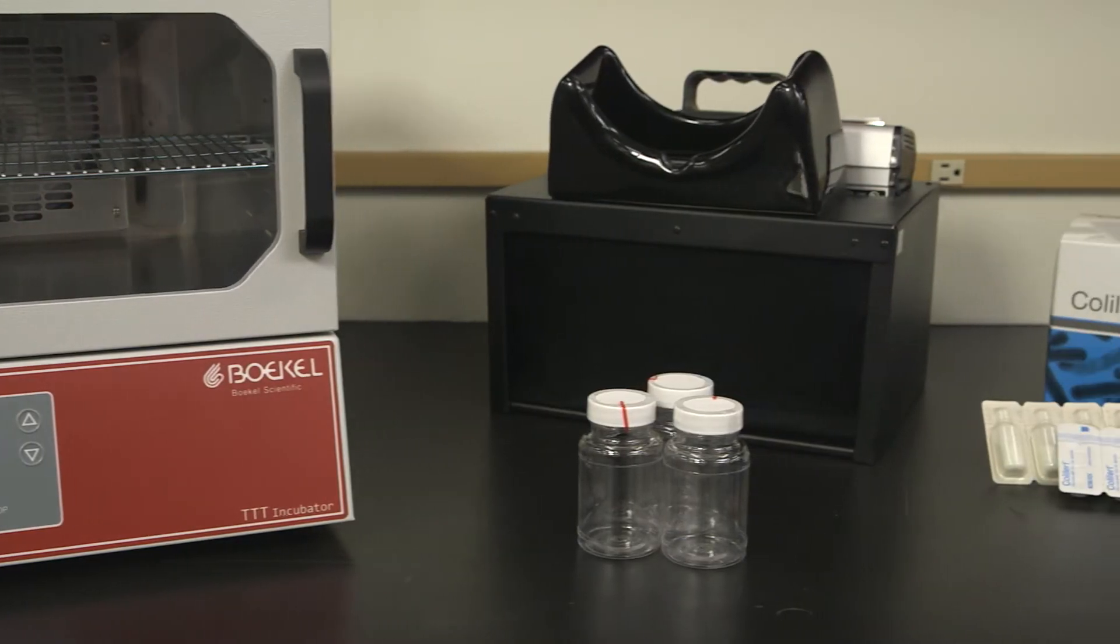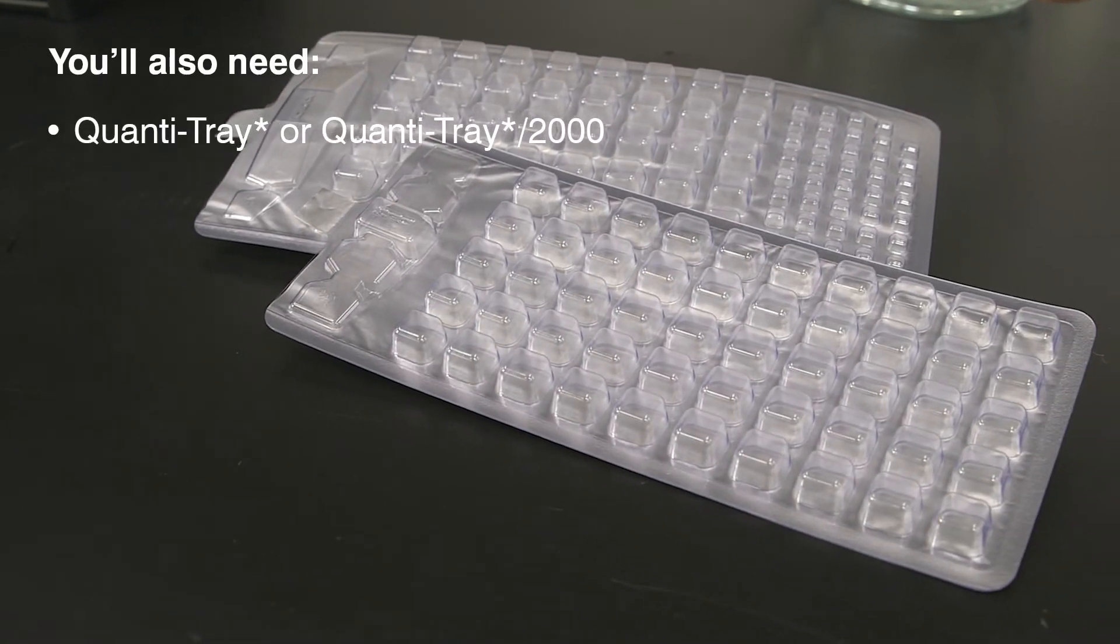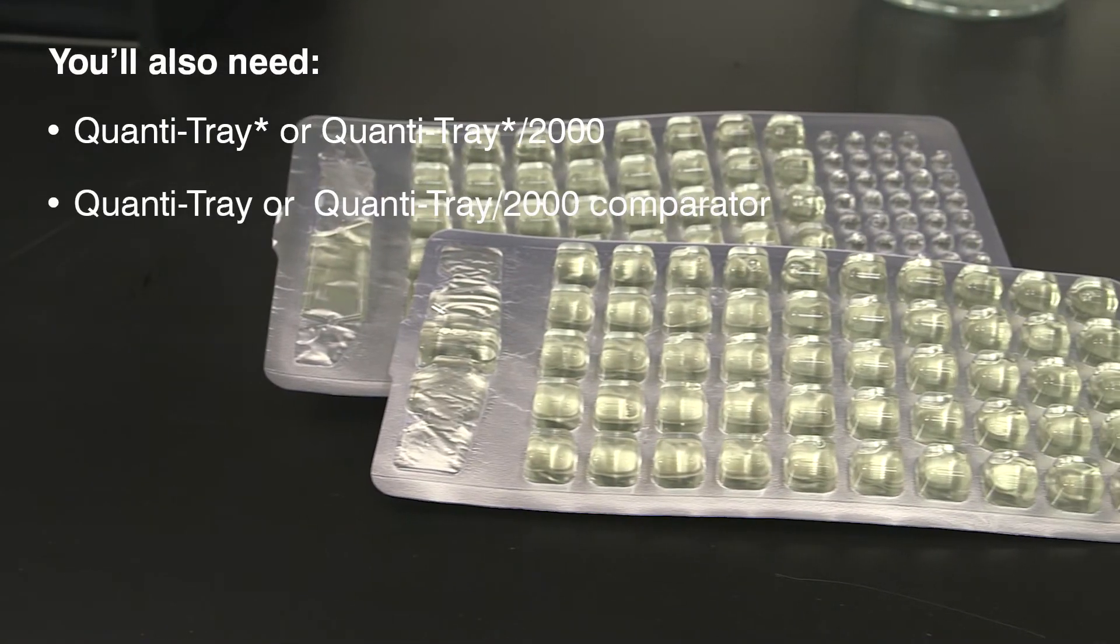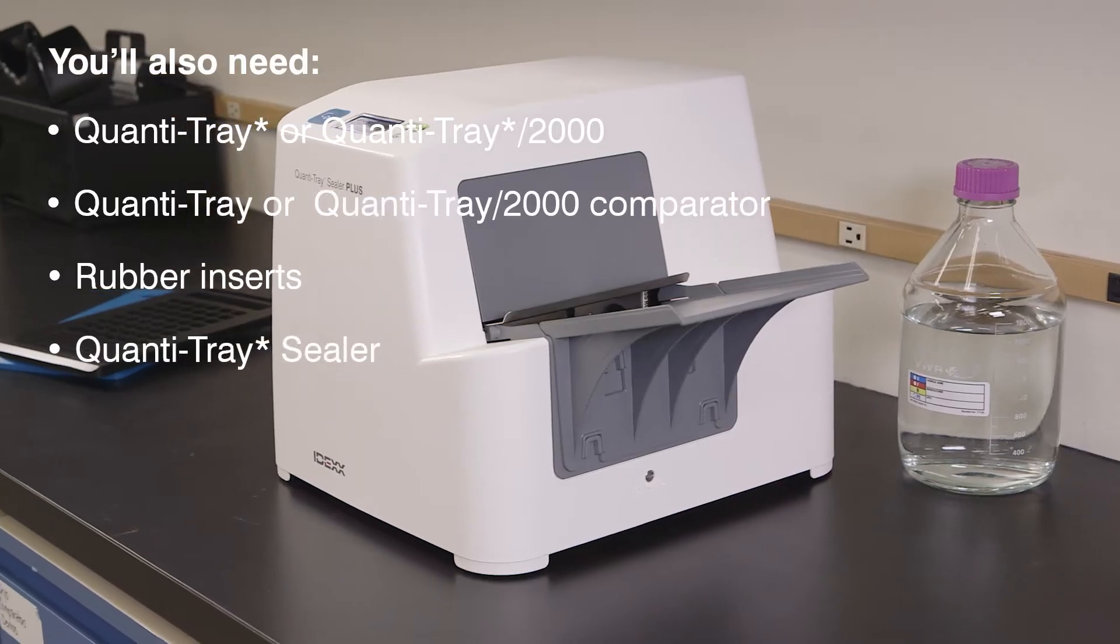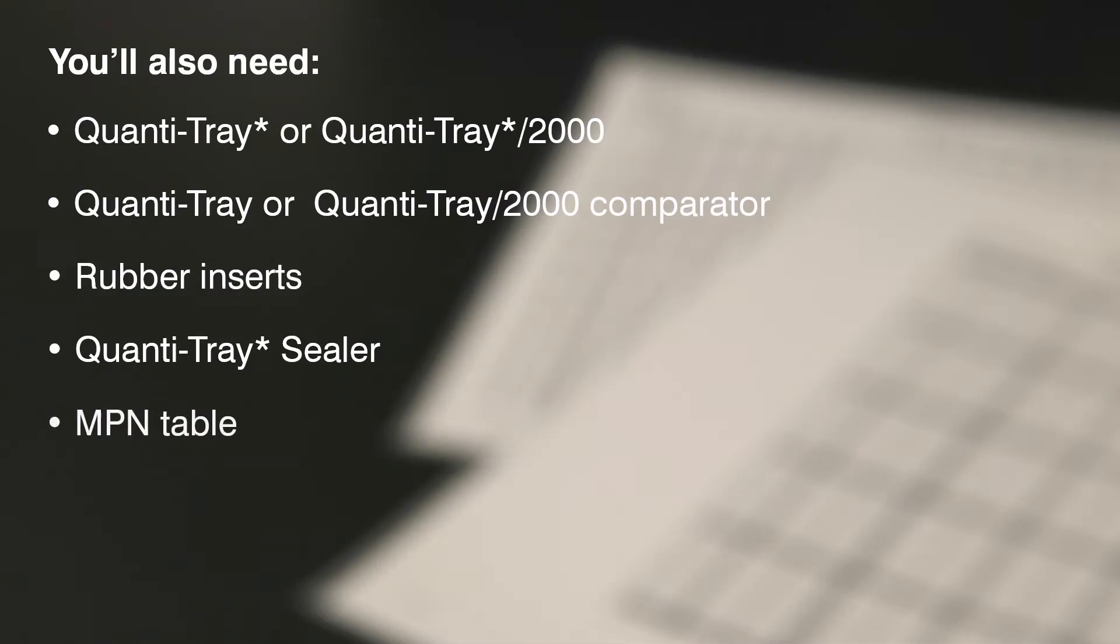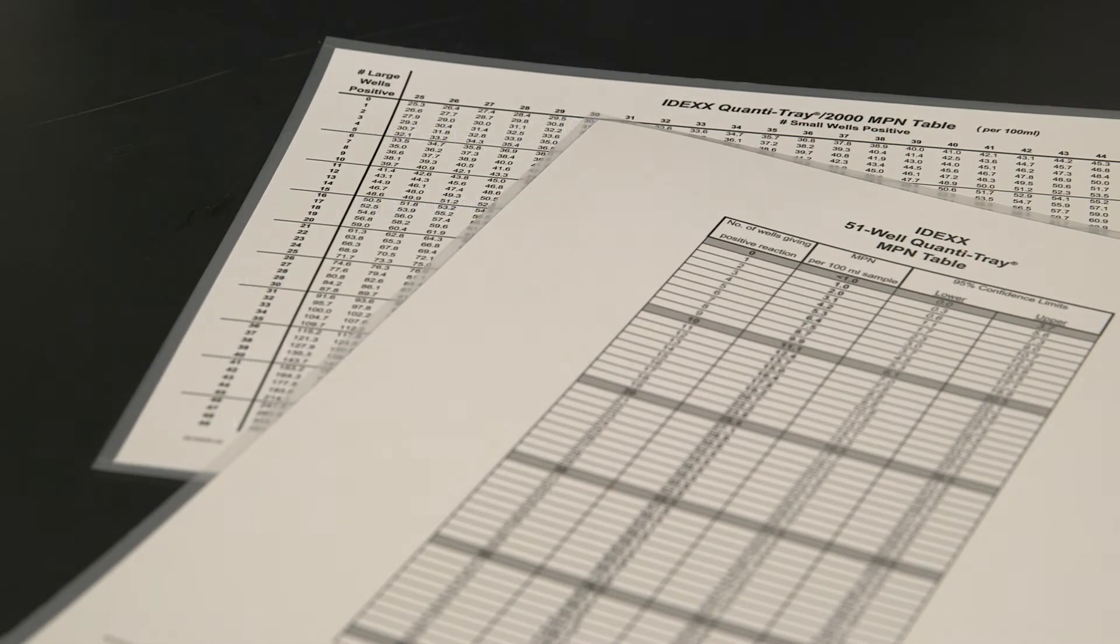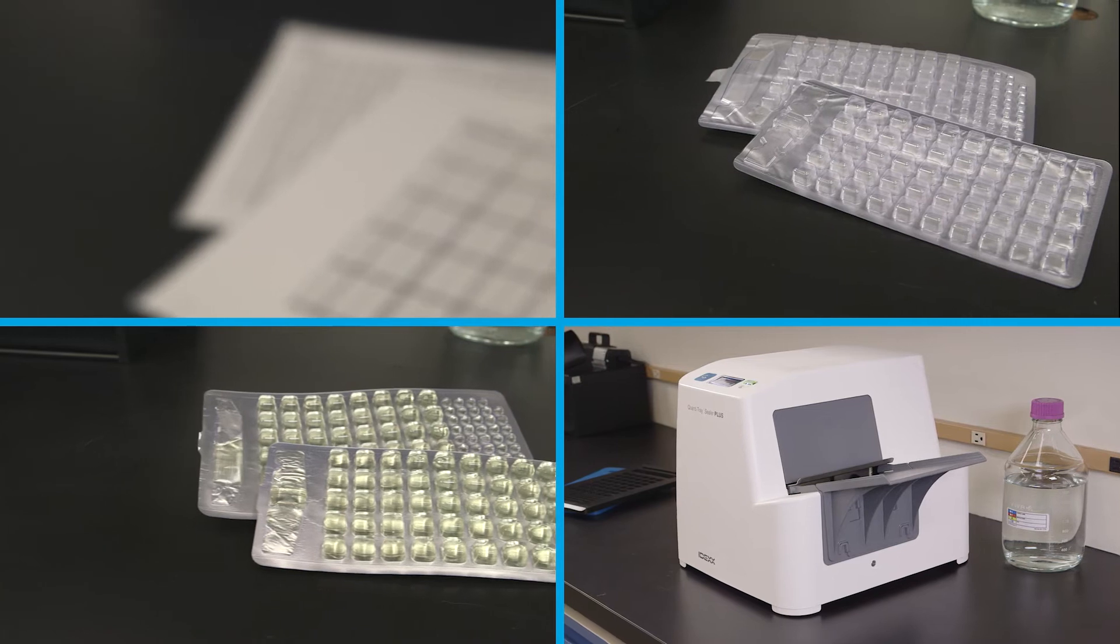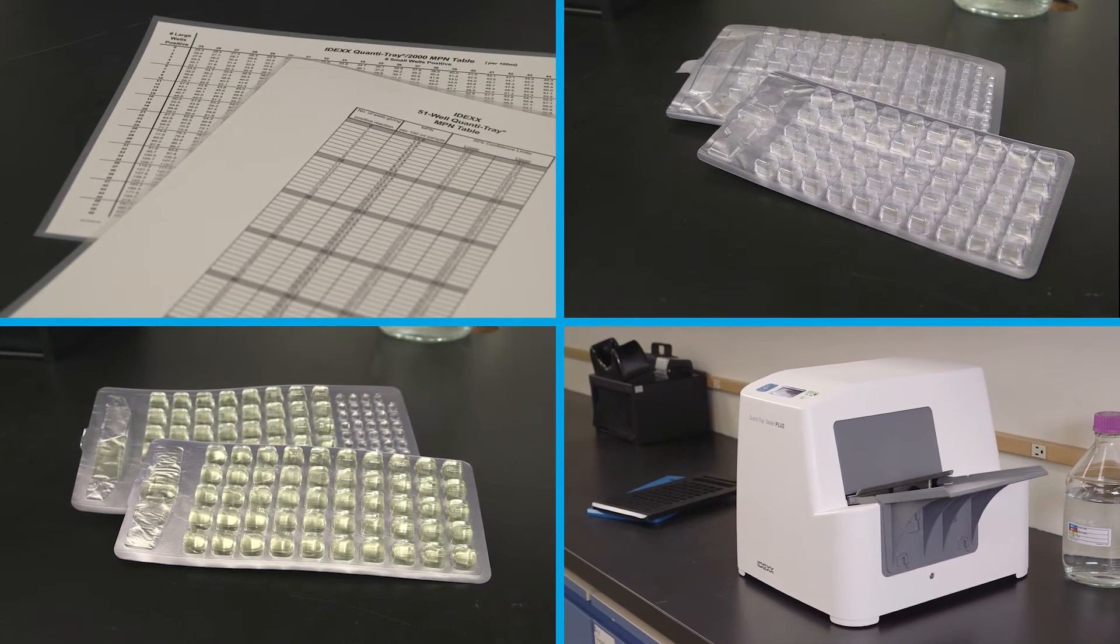In addition to the materials used for presence-absence detection for quantification, you will need a Quantitray or Quantitray 2000, a Quantitray comparator, Quantitray rubber inserts, a Quantitray sealer and the included Most Probable Number Table or the IDEXX Automated MPN Generator Program found at IDEXX.com. All of these items are included in the Quantitray system and are available from IDEXX.